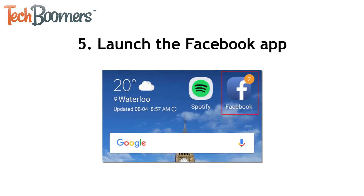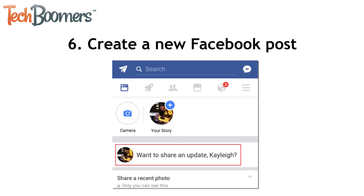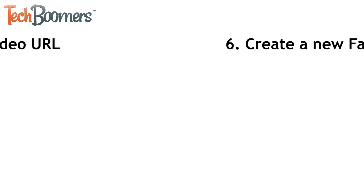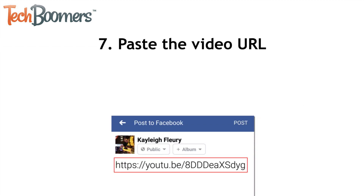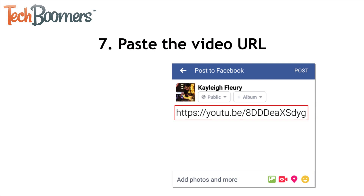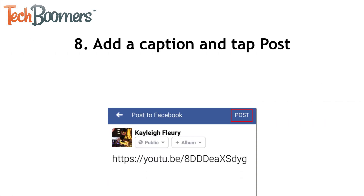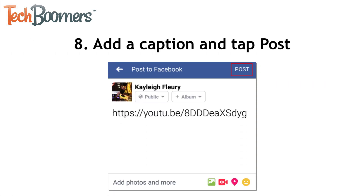Now go back to your Android home screen and launch your Facebook app. Start creating a new Facebook post. In the text box, paste the URL of the video you copied from YouTube. Add a caption, then tap Post to share it to your Facebook page.